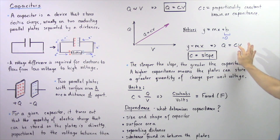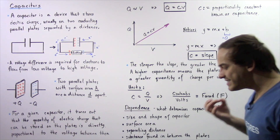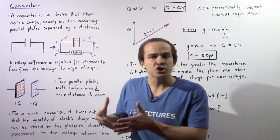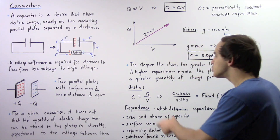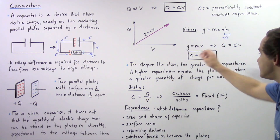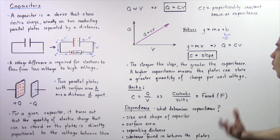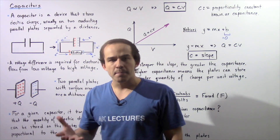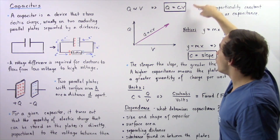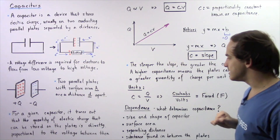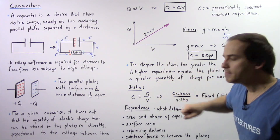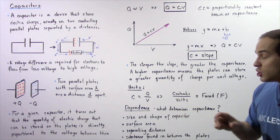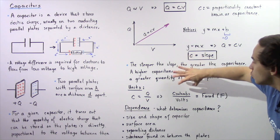The capacitance of any capacitor is essentially how much electric charge that capacitor can store. A higher C value means the plates can store a greater quantity of charge per unit voltage. Rearranging Q = CV gives us C = Q/V, where Q is in coulombs and V is in volts. So the units for capacitance are coulombs per volt, which is given its own unit called the farad, denoted by an uppercase F.